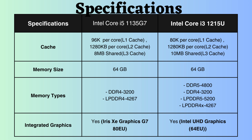Both of these processors support up to 64GB of RAM. The Intel Core i5-1215U supports DDR5 and LPDDR5, and its memory frequency support is greater than that of the Intel i5-1135G7.